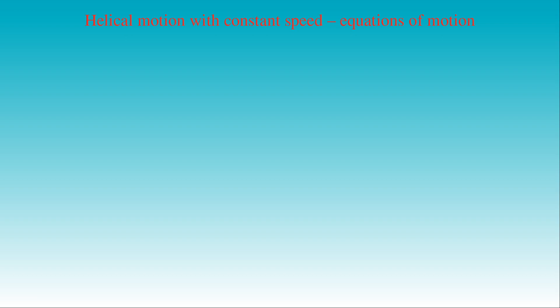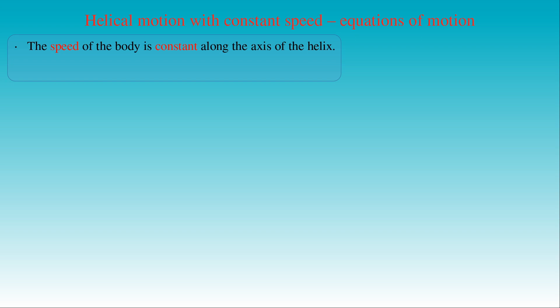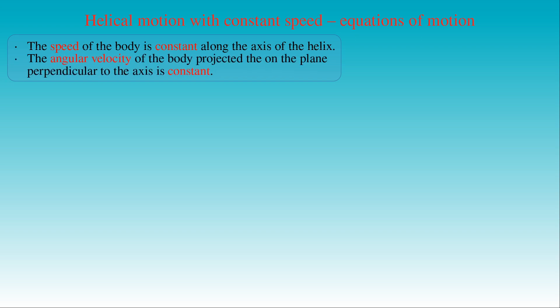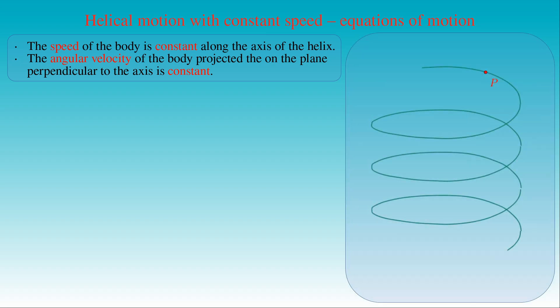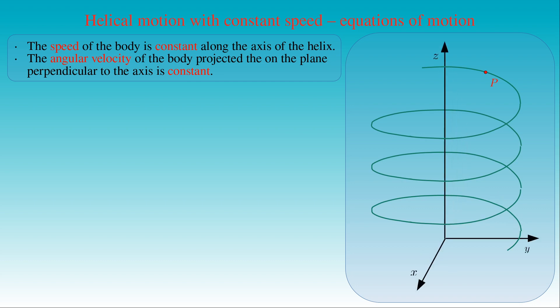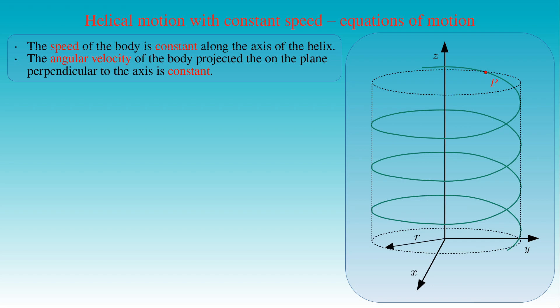Now we present the equations of motion of a body traveling on a helix at a constant speed with respect to a given frame of reference. We assume that the speed of the body is constant in the direction of the axis of the helix, and its angular velocity projected on the plane perpendicular to the axis is also constant. In this case the motion is uniform along the helical trajectory. We attach a Cartesian coordinate system adapted to the helix, choosing the axis of the helix as the z-axis, with the origin at an arbitrary point on the axis. The projection of the helix on the xy-plane perpendicular to the z-axis describes a circle with radius R.